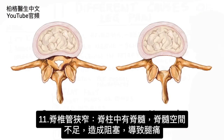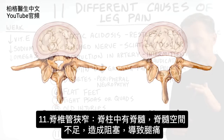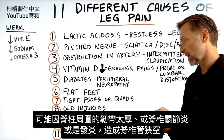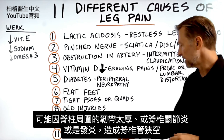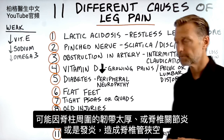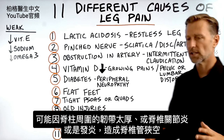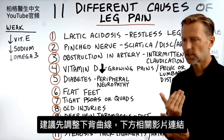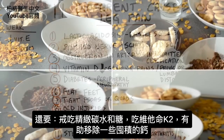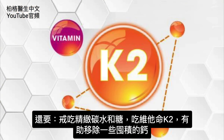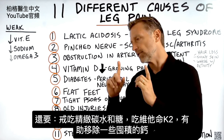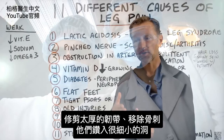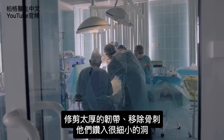Number eleven: stenosis. You have the spinal column and the spinal cord inside it — if there's not enough space for the spinal cord, that obstruction can cause leg pain. It can come from thickened ligaments around the spinal column, arthritis or spurring near the joints, or inflammation that won't allow the space to open. I'd highly recommend working on restoring your lower back curve first, getting rid of refined carbs and sugar, and taking vitamin K2 to possibly help remove some calcium. If nothing works, there's a really great minimally invasive procedure — my mother had it — that trims the thickened ligament and removes small osteophytes and spurring through a very small incision covered with just a band-aid.